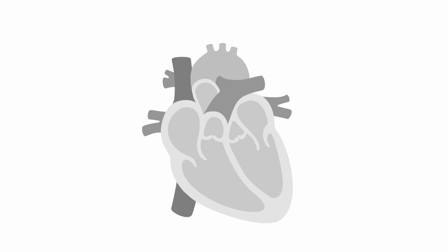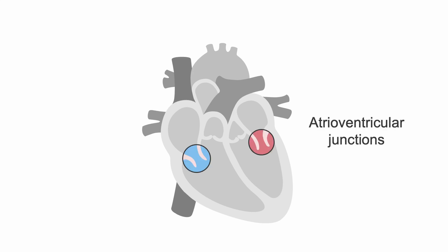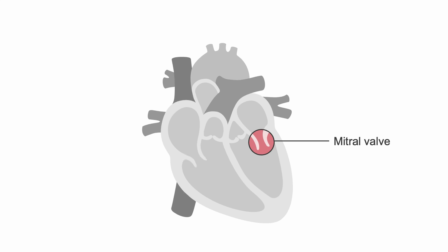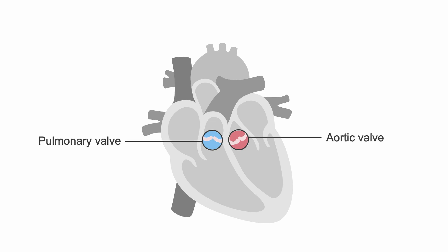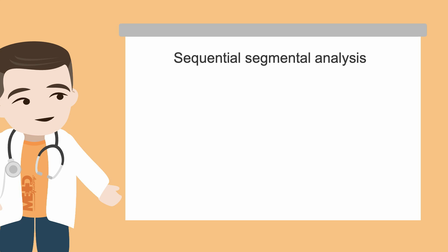Between the segments, there are intervening junctions. The atrioventricular junctions describe the connections between the atria and ventricles, including the mitral and tricuspid valves. The ventriculoarterial junctions describe the connections between the ventricles and the great arteries, including the aortic and pulmonary valves.